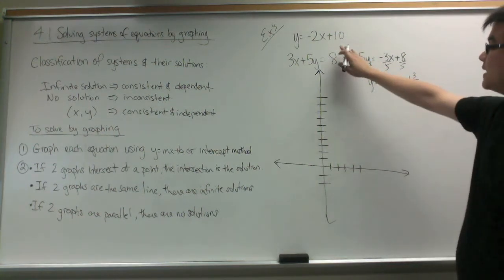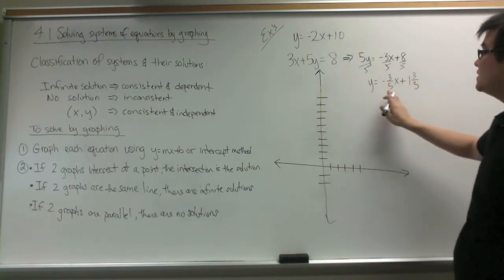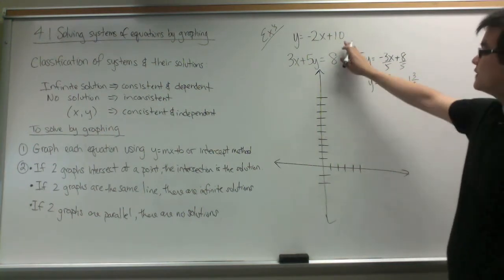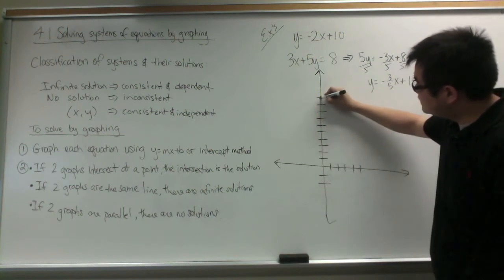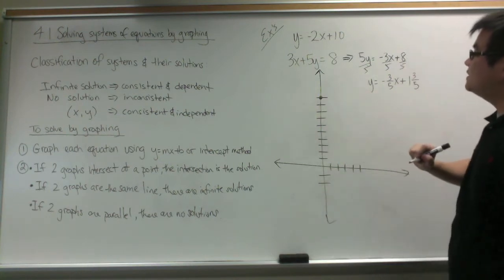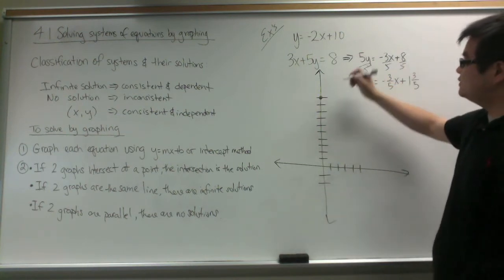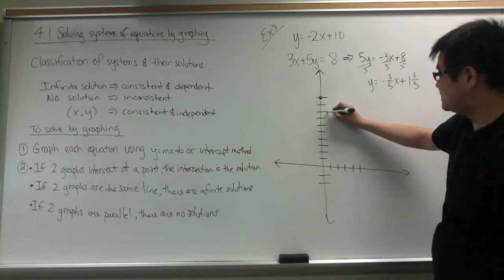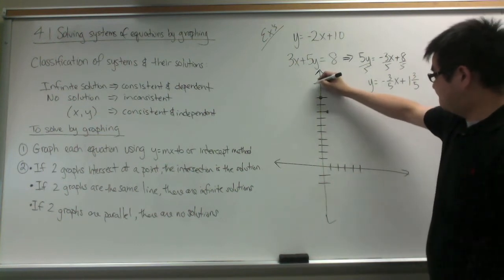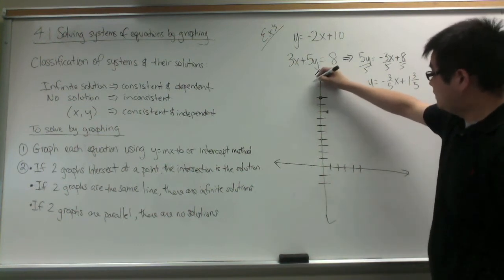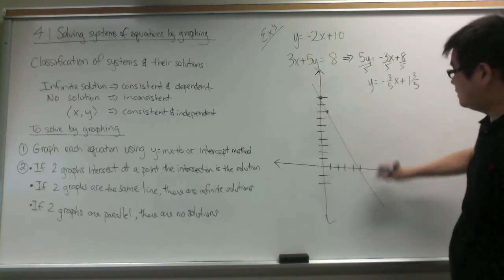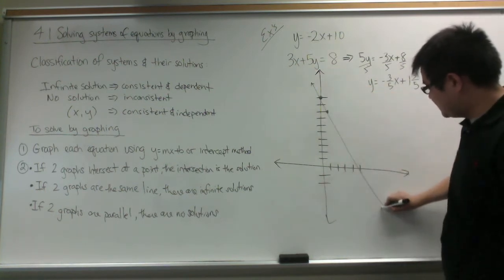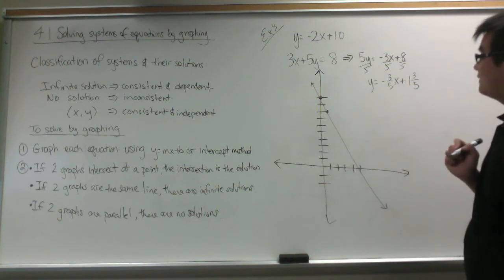Now I am going to graph my two equations. For the first one, the y-intercept is 10, so up 10 from the origin. Then, down 2 and over 1. That would be the equation of the first line.